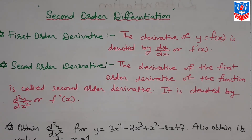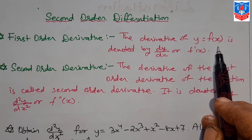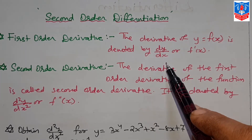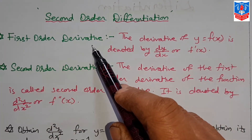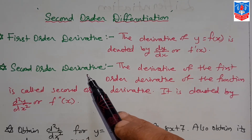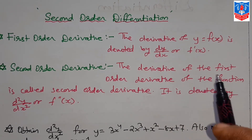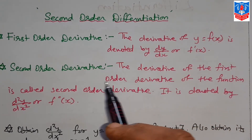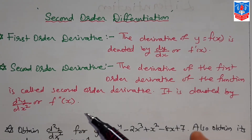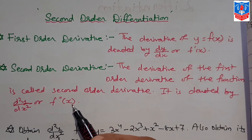The derivative of a function of x is generally denoted by dy/dx or f'(x), and this derivative is known as the first order derivative. The second order derivative means the derivative of the first order derivative of the function — that is, the derivative of dy/dx or f'(x) — which is denoted by d²y/dx² or f''(x).